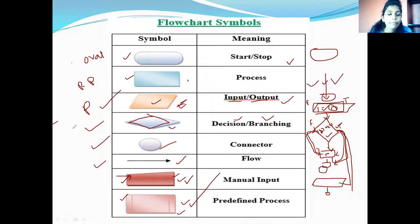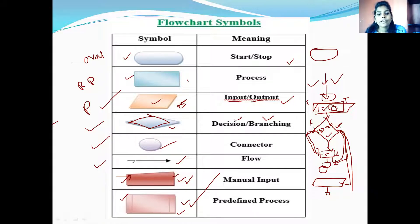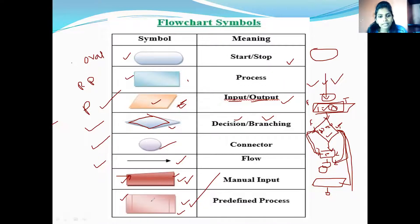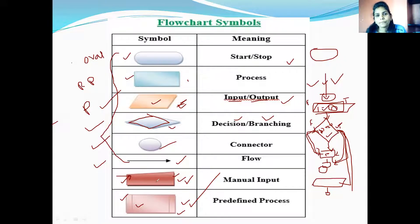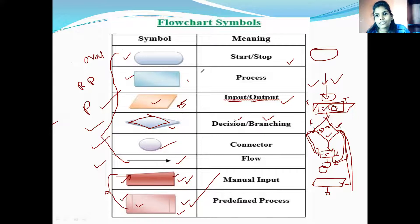So these symbols are very important. What are those symbols? Oval, rectangular, parallelogram, rhombus, circle, arrow mark, manual input symbol — also called the off-page connector — and predefined process. The predefined process symbol is used when needed; it is optional and not used as frequently as the others.